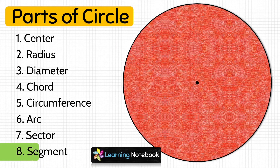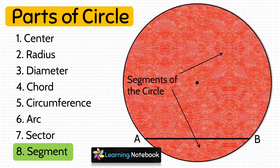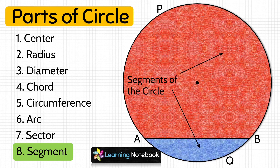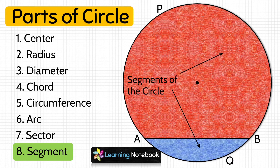The last part of the circle is segment. To understand segment, let's take two points A and B on this circle and join them, giving us chord AB. This chord divides the circle into two segments. One segment is AQB, marked in blue, and the other segment is APB, marked in red. AQB is the minor segment and APB is the major segment of the circle.